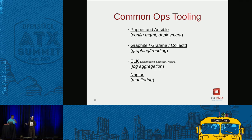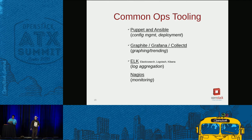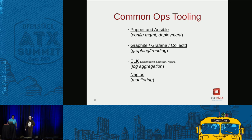The ELK stack — Elasticsearch, Logstash, and Kibana — handles log aggregation. We don't want to be in the business of SSHing to servers and individually looking at log files. OpenStack is very verbose, so we try to do a lot with ELK to put everything in one location. For monitoring, we stuck with Nagios — there's a big community around it and we do a lot of custom plugins and checks that don't fit out-of-the-box with OpenStack.